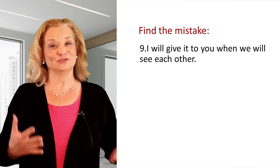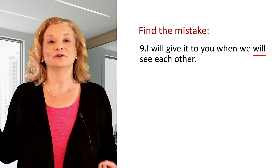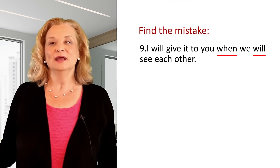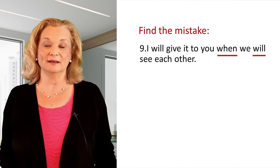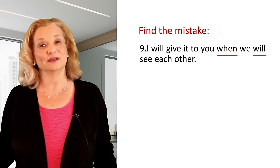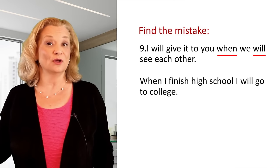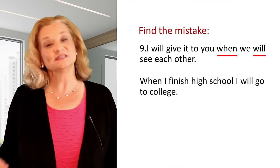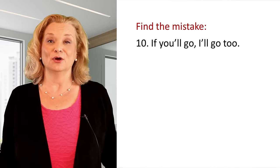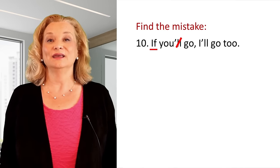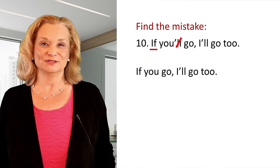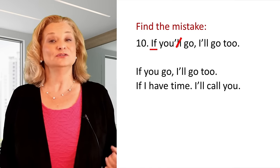"I will give it to you when we will see each other." Did you catch the mistake? The mistake is using WILL after WHEN. You only need to use WILL one time: "I will give it to you when we see each other." When we are talking about the future and we use the word WHEN, we must not use WILL. So we say "when I see you," not "when I will see you." "When I see you tomorrow, I will give it to you." "When I finish high school, I will go to college." The same rule applies with IF — we don't use WILL with the IF clause. "If you'll go, I'll go too" is incorrect. We say "if you go, I'll go too." "If I have time, I'll call you." Don't use WILL two times.